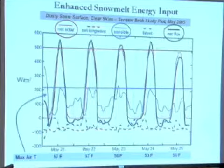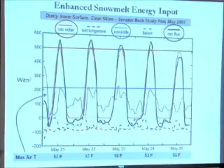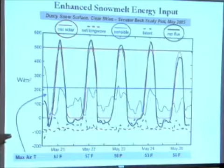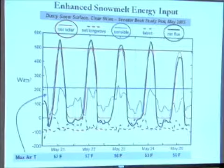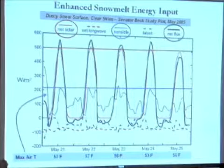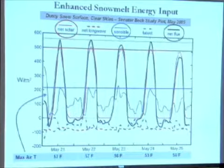The other term is latent heat — the amount of energy absorbed or generated during the phase change of water from vapor to solid to liquid. That's also almost always negative. So the real players in snowmelt are air temperatures and the effects of reducing the snow albedo.